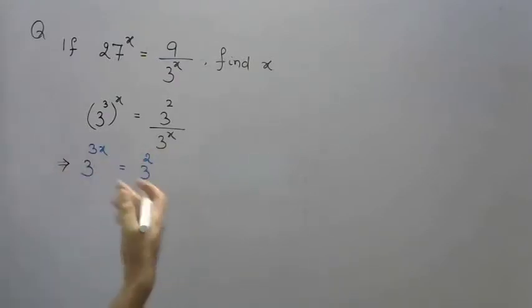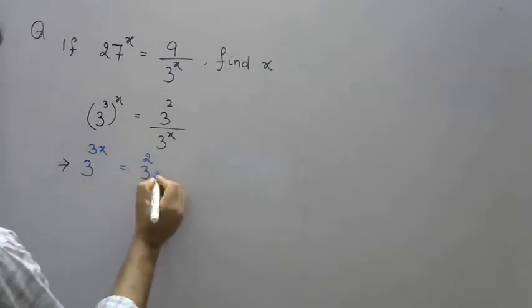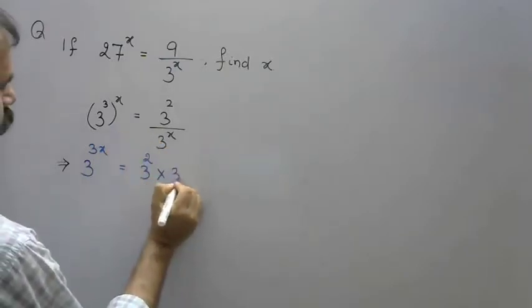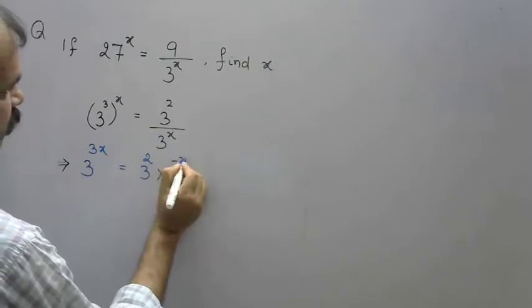The denominator 3^x becomes 3^(-x) when we bring it to the numerator.